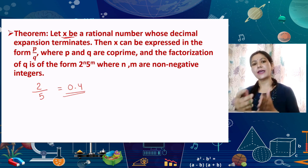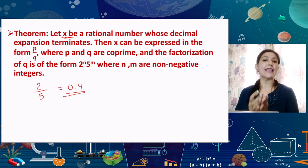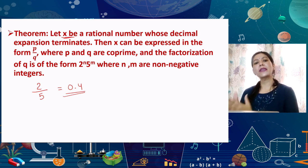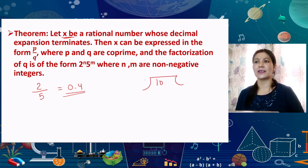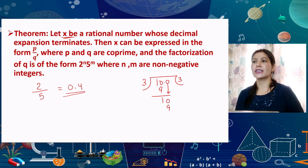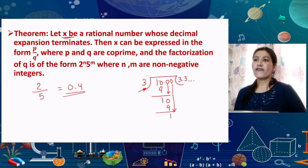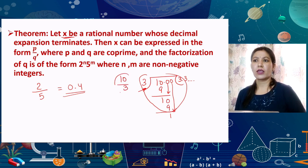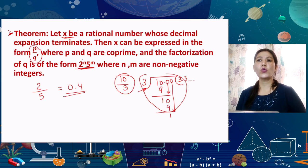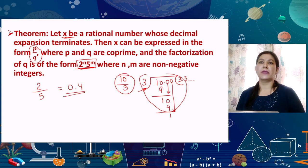For example, 7/10 can be written as 7/(2¹ × 5¹) — the denominator is already in the form 2ⁿ × 5ᵐ, so it terminates. Vice versa: if a rational number's denominator cannot be written only in the form 2ⁿ × 5ᵐ, then that number will be non-terminating repeating. For example, 10/3 — the denominator is 3, not in the required form, so without performing the actual division we can say it is non-terminating repeating.